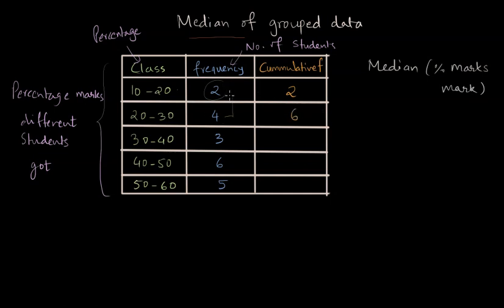Six students have got percentages less than 30. Similarly, the cumulative frequency for the third class, which is 30 to 40 percent is two plus four plus three, which is nine. Cumulative frequency for 40 to 50 percent is nine plus six, which is 15. For the last class, the cumulative frequency is 20. This is also N or the total frequency.